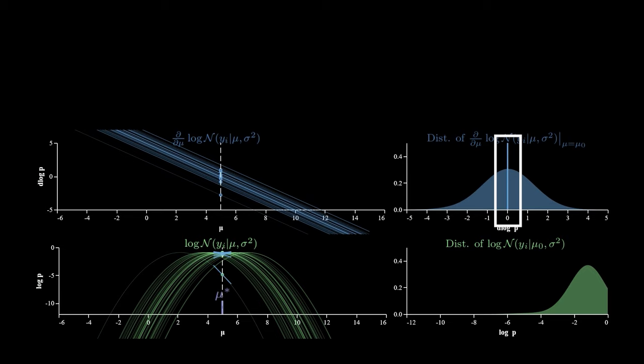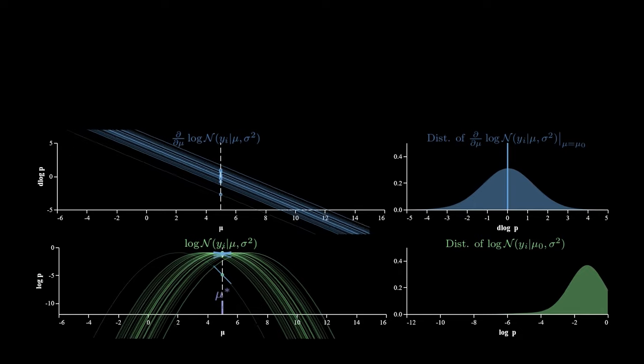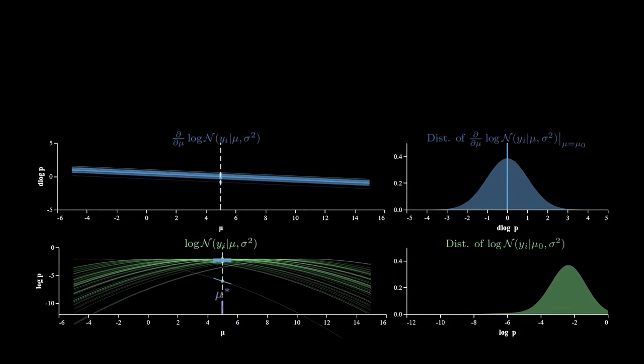But there is one thing that generalizes to all of the cases. When we evaluate these score functions at the true parameter value, the mean of the scores is zero. To provide some real simple intuition, the average score is zero at the true point because it has to be. If it wasn't, the data would be suggesting a more likely parameter value is somewhere else. But in this setup, that can't be. The most likely parameter value must be our true parameter value because it generated our data. And now we're just about ready to see the Fisher information. But I want you to guess what it is.